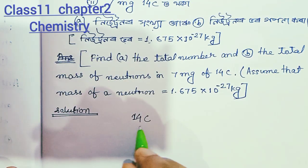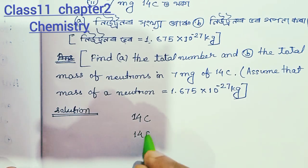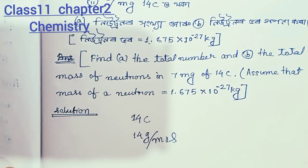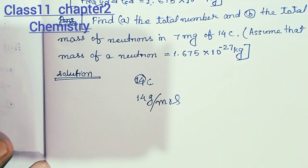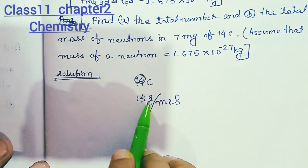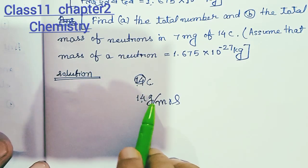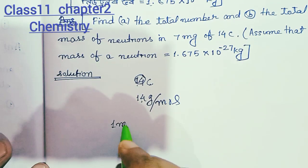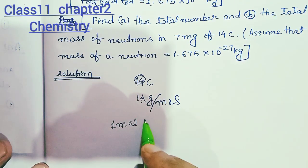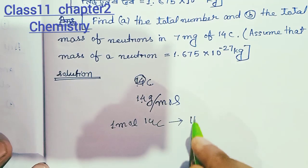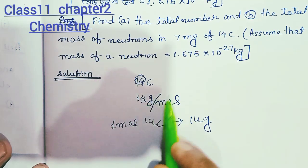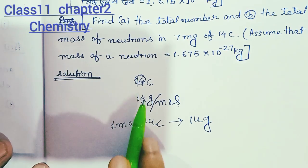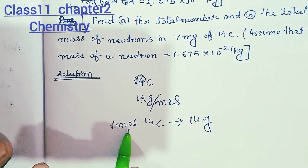The mass of Carbon-14 is 14 grams per mole. So 1 mole of Carbon-14 is 14 grams. Therefore, 1 mole equals 14 grams per mole.